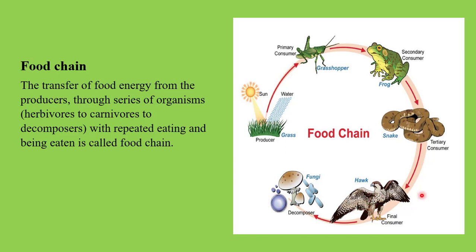Finally, when death and decay occur, there are the decomposers. So these are almost all the biotic components of the ecosystem — what is happening and how they are all connected. Each species is connected because the previous level is a source of food for the next species, and that next species is later the source of food for the one after it. So these are all dependent on each other.